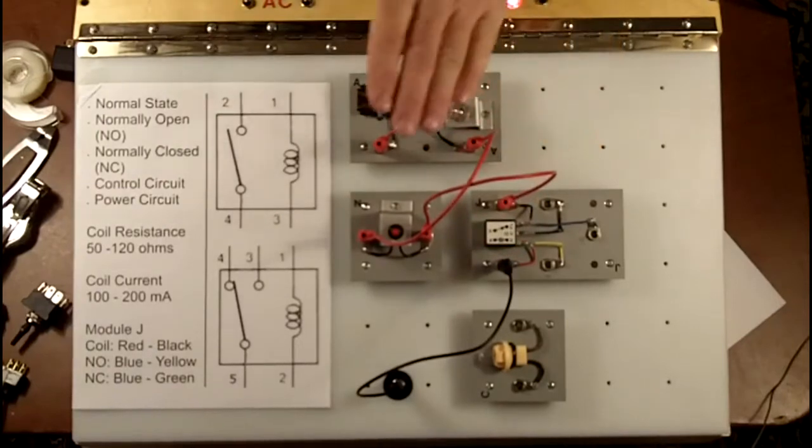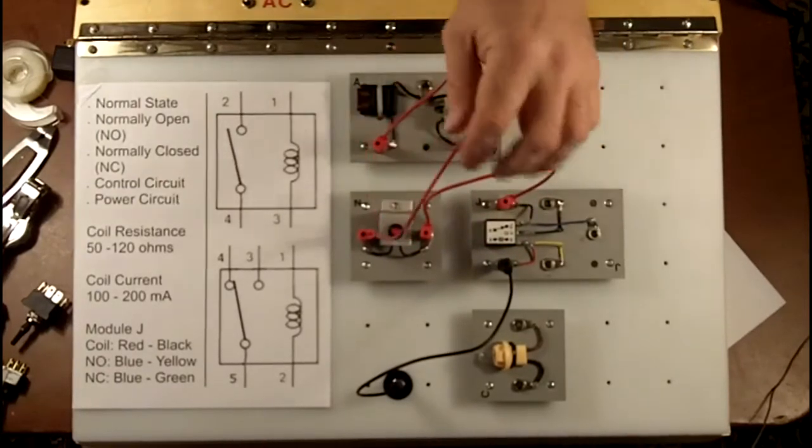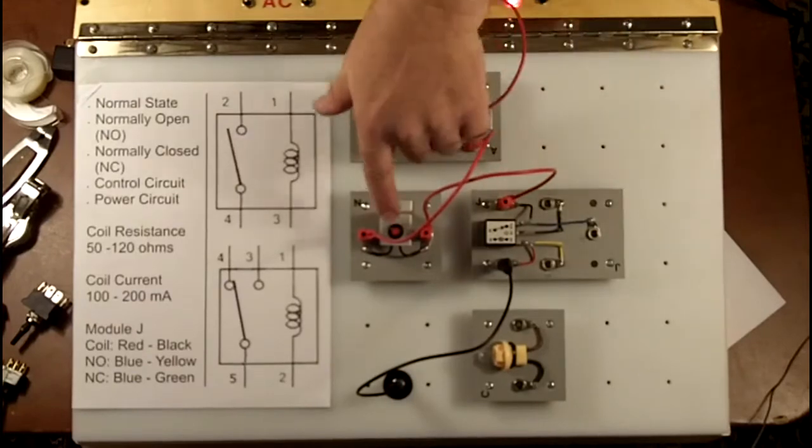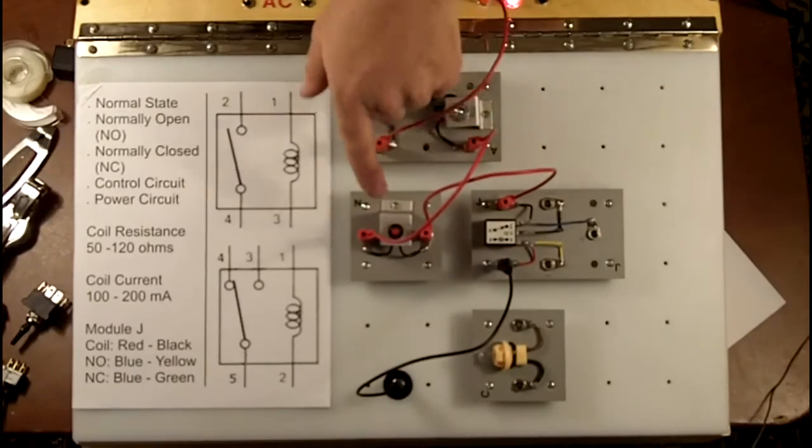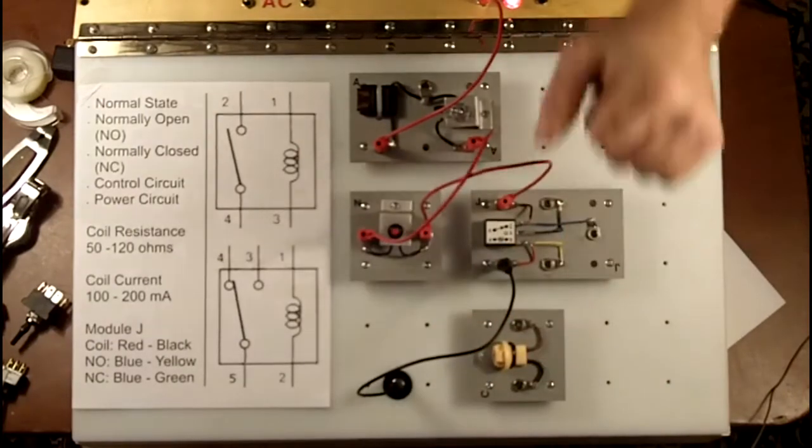Now this is called a power controlled relay because on the power side, the red part, it's power from the 12-volt tap to here. So we have the switch on this side. We could put the switch on this side. It would be called a ground controlled relay.